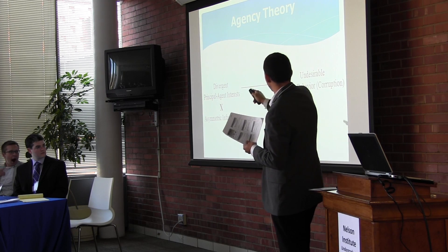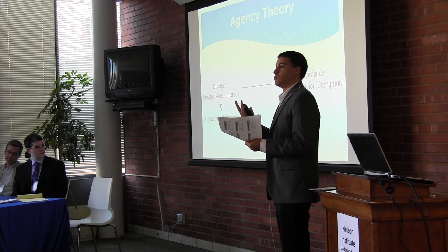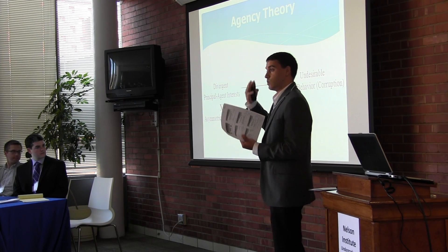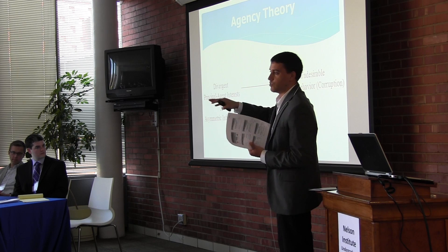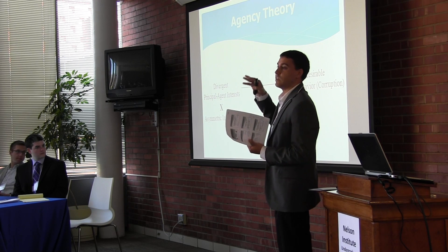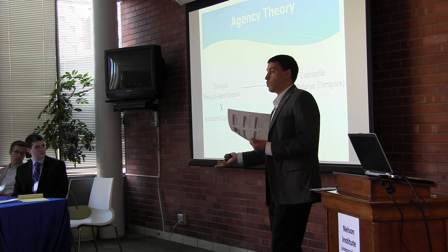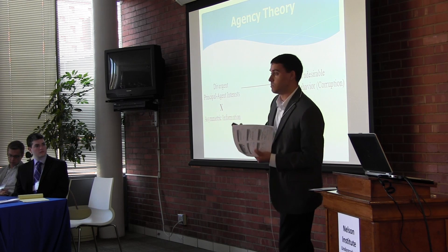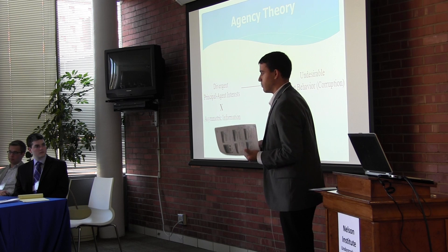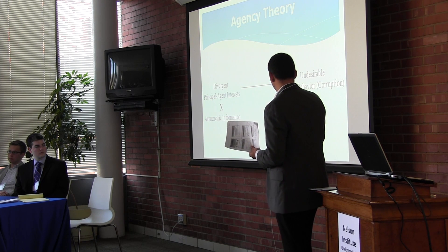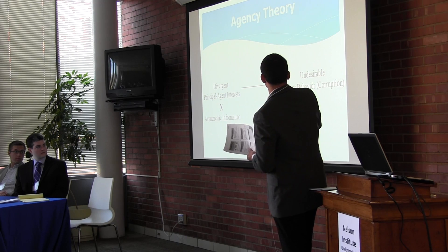This divergence of interests leads to agents pursuing behavior that isn't in accordance with what the principal wants — and in this case, that's corruption. The UN Secretary General and UN member states don't want to see corruption, but individual agents, motivated by opportunism and self-interest, pursue corruption anyway. So the causal story is that this divergence in interest leads to undesirable behavior.